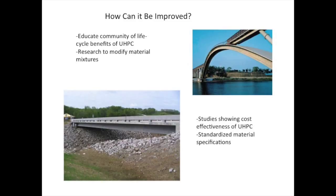For UHPC to be improved and further expanded in the design community, more general information regarding the material must be introduced to a larger audience. Such information includes long-run cost effectiveness analysis, generalized material specifications, and overall design applications and guidelines. Additionally, further research could be conducted to determine ways of modifying current production methods to use local or regional materials as opposed to more expensive quartz materials from distant locations. Overall, this would allow the use of UHPC to expand farther in its application while maintaining a low cost — a great incentive for any firm contemplating the use of the material.